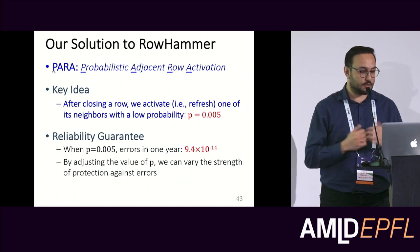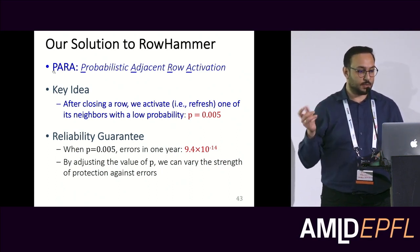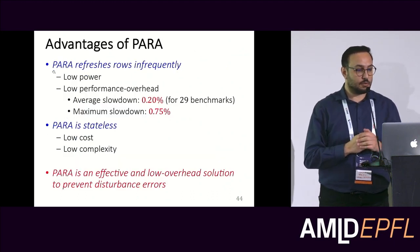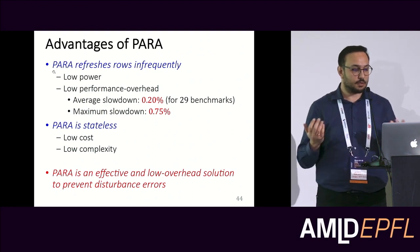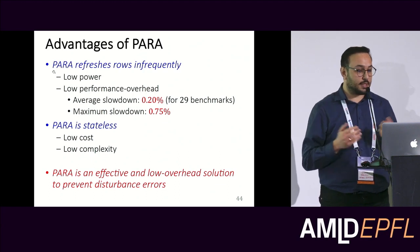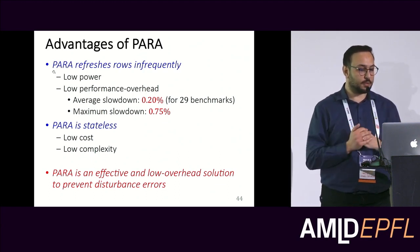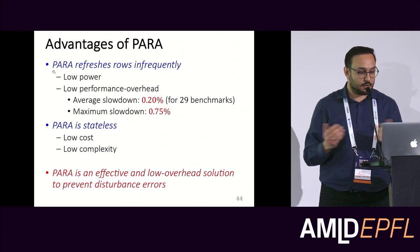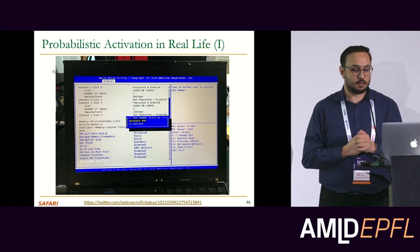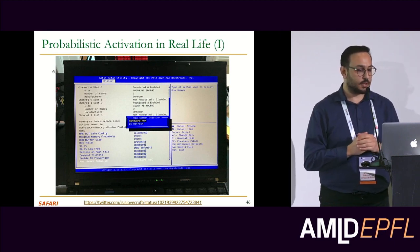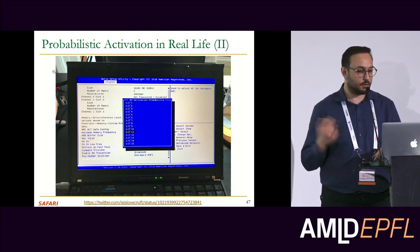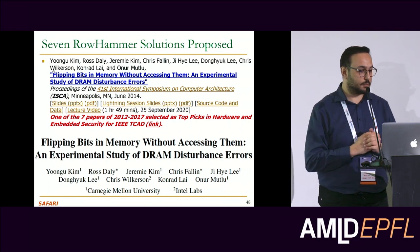We also worked on Rowhammer solutions. The first solution shared in the 2014 paper is called PARA — Probabilistic Adjacent Row Activation. The key idea is that when you close a row, you activate one of its neighbors with a low probability, which gives you sufficient reliability guarantees. You can adjust this threshold to make the mitigation more or less aggressive. PARA refreshes rows infrequently so it has low power consumption, low performance overhead, and it's stateless so its cost and complexity are low. It has been implemented in some real systems as well.